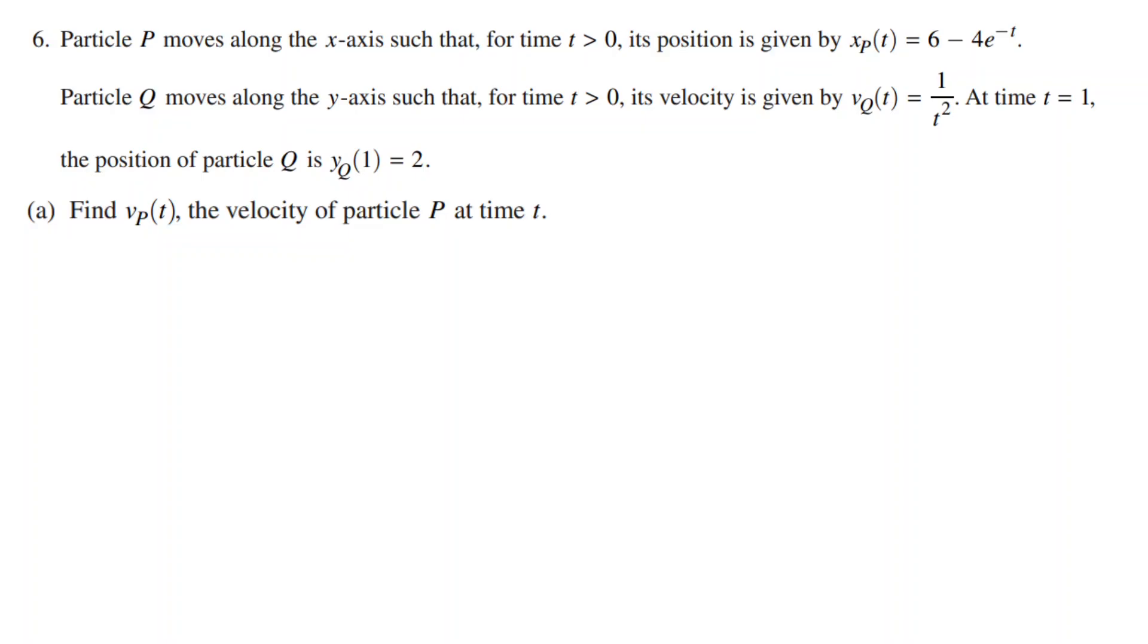This is a double particle problem and we will have to do a lot of derivatives and anti-derivatives. Part A tells us to find vp of t, the velocity of particle P at time t. We are given that the position function is xp of t, so vp of t would just be xp prime of t. We take the derivative and this equals 4e to the power of negative t. Make sure you get the signs correct.